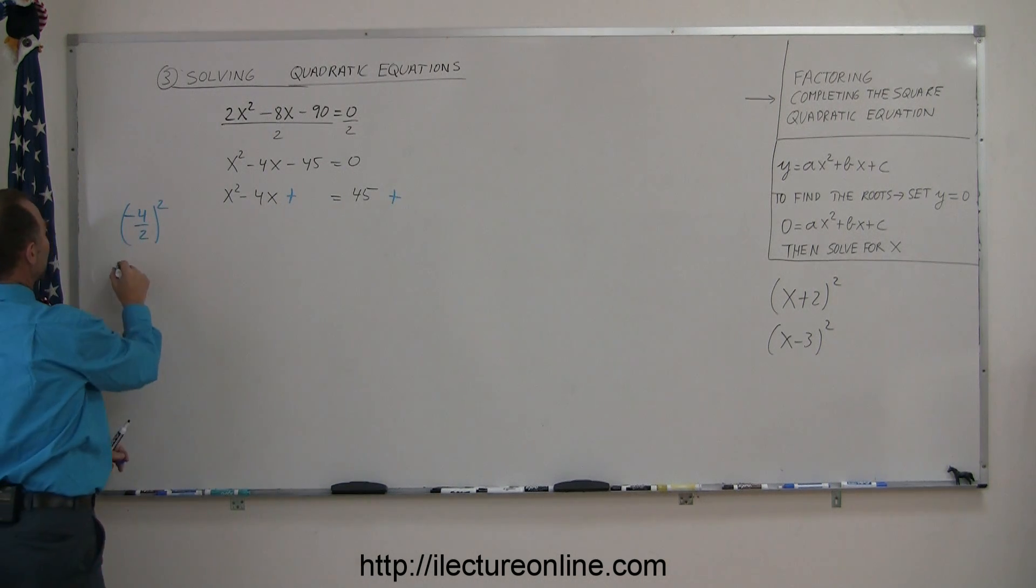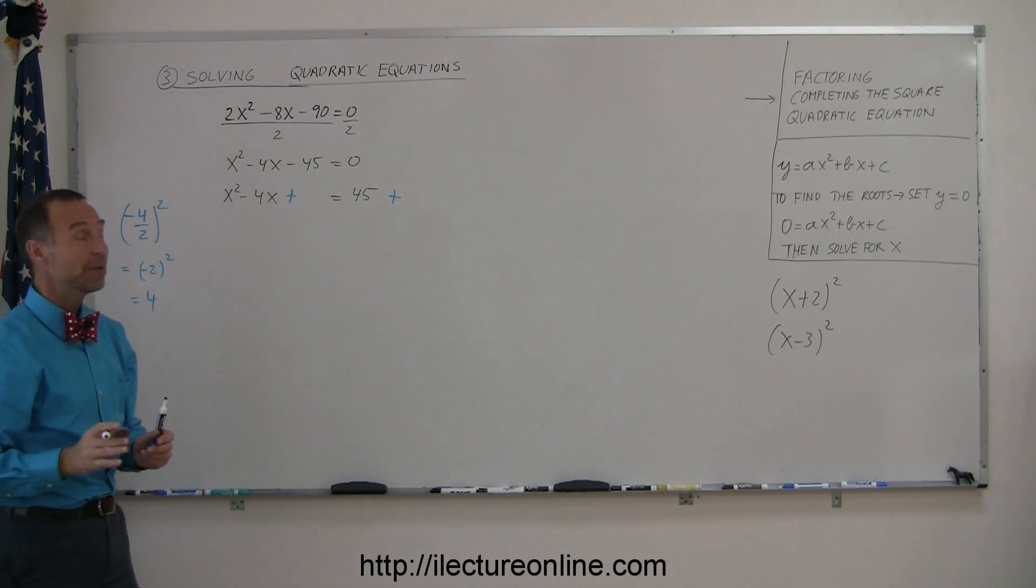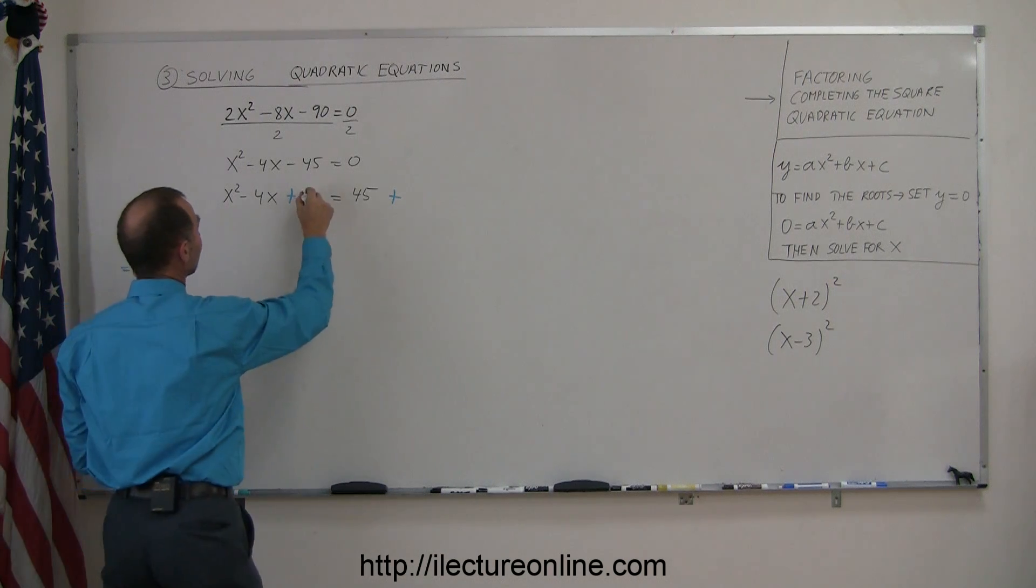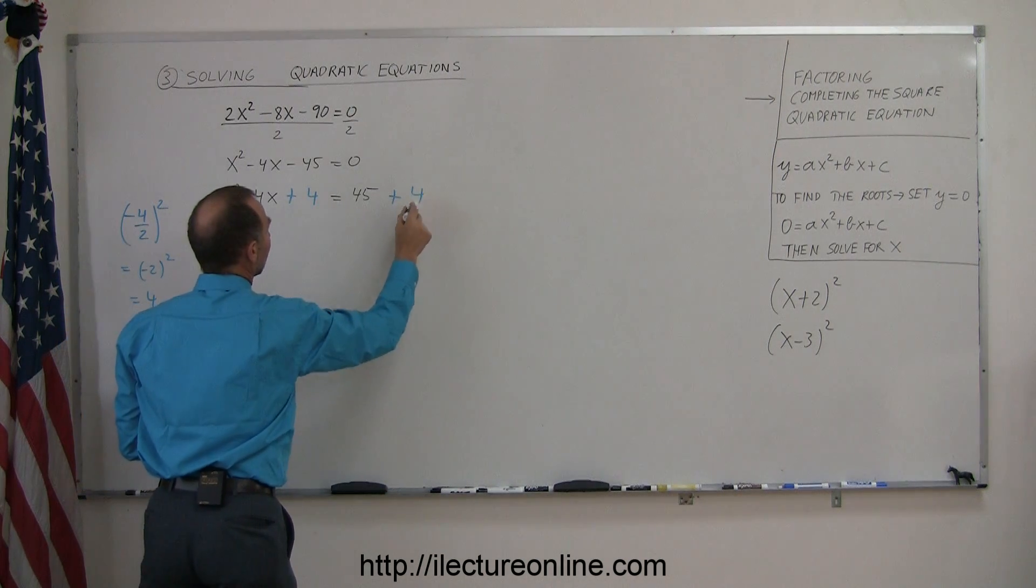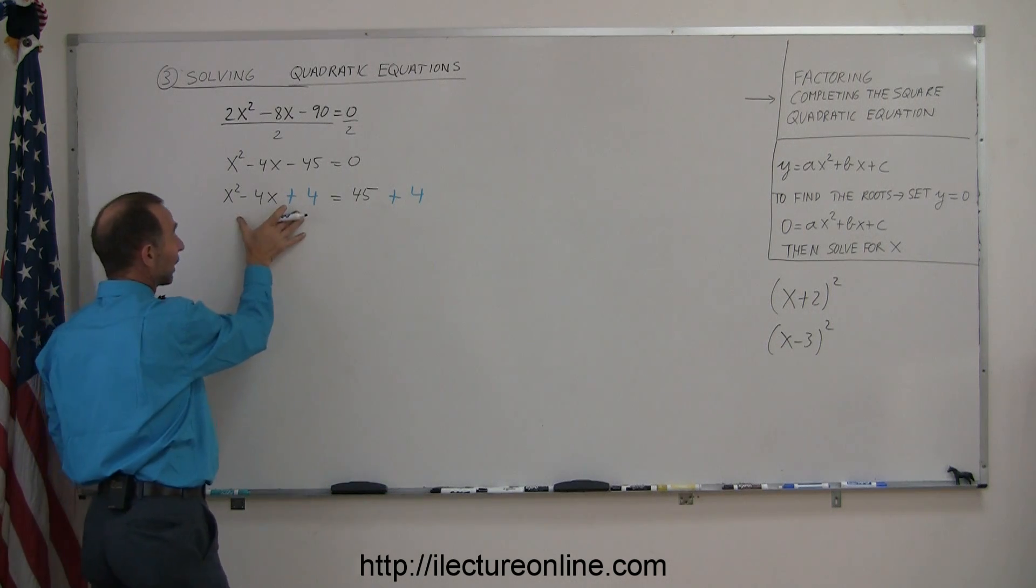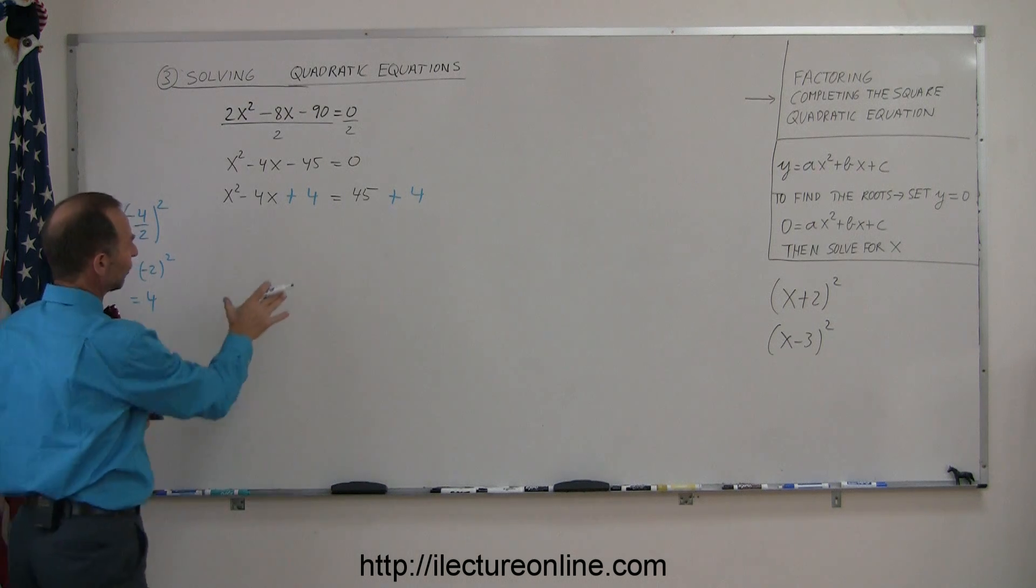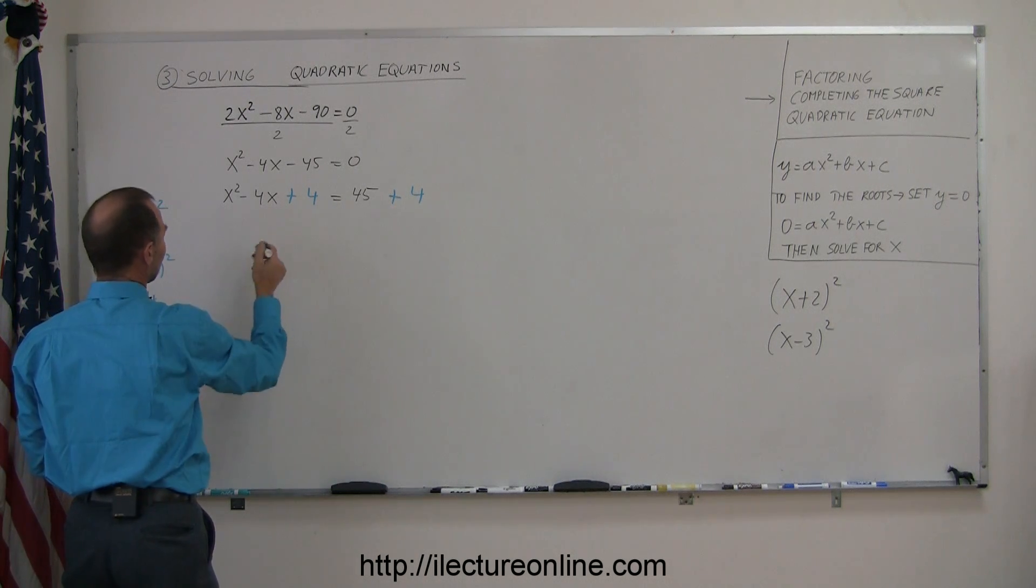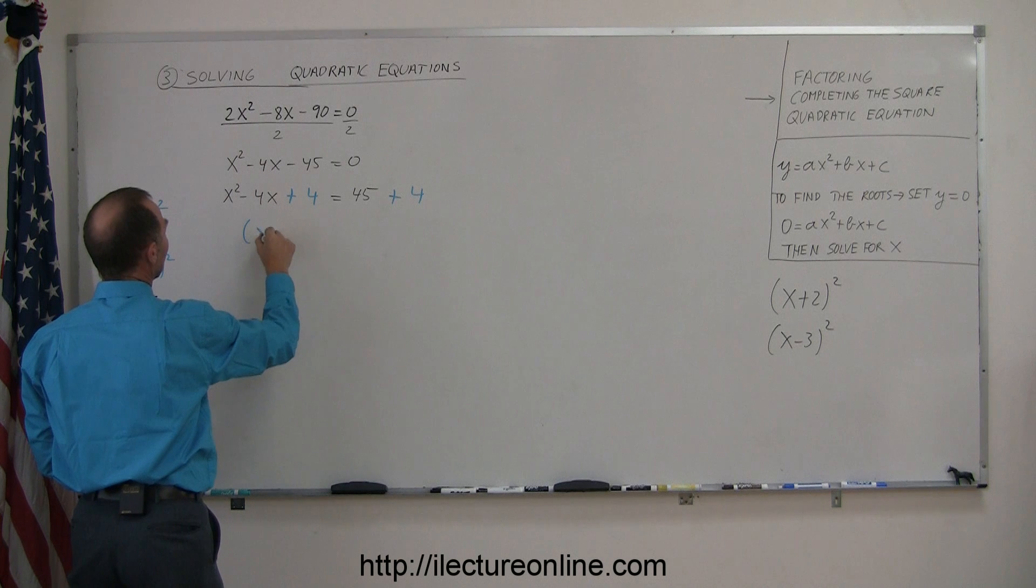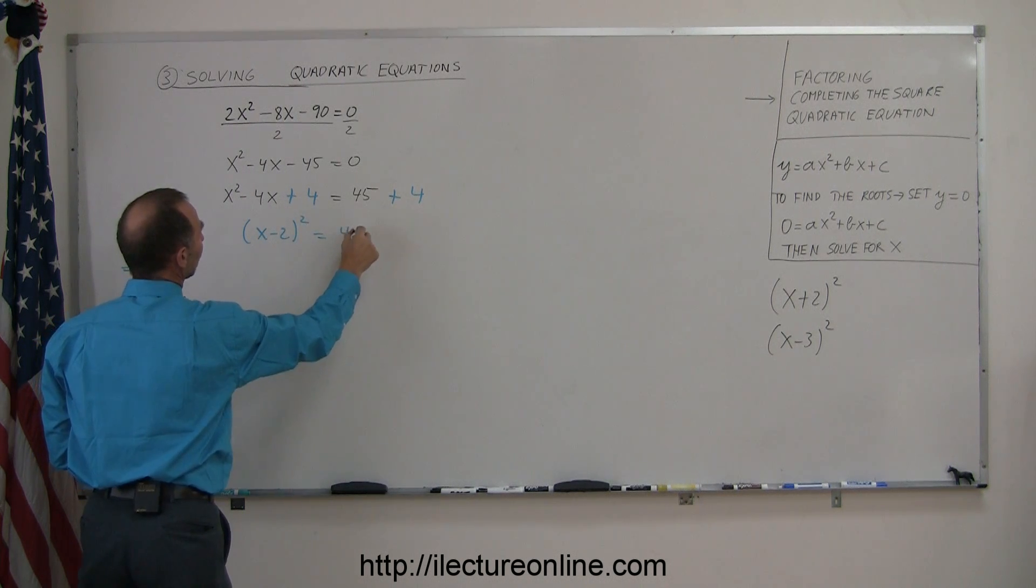Minus 4 divided by 2 equals minus 2. We square that, and minus 2 squared equals 4, so we add 4 to both sides. By doing that, the left side is now a perfect square, the square of a binomial. We can factor this as x minus 2 squared, and on the right side, that equals 49.